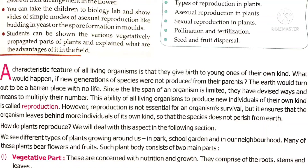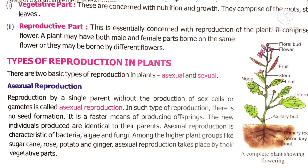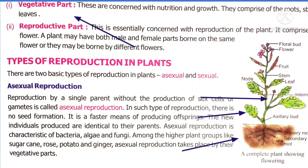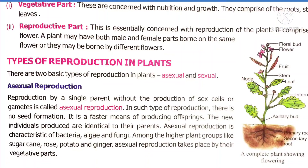In this chapter we discuss the reproduction or multiplication of plants. Basically, a plant body consists of two main parts. One is the vegetative part, which includes roots, stems, leaves, etc. The second is the reproductive part, which includes the male and female parts of the flower.